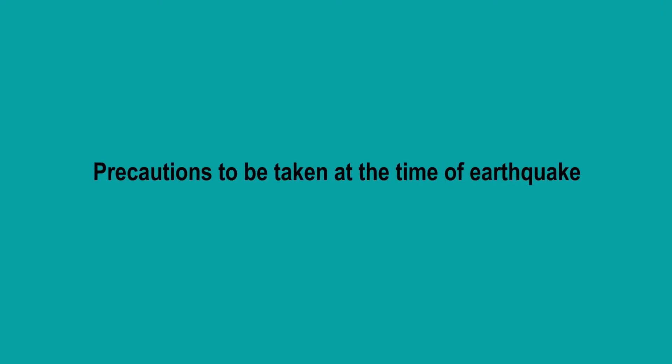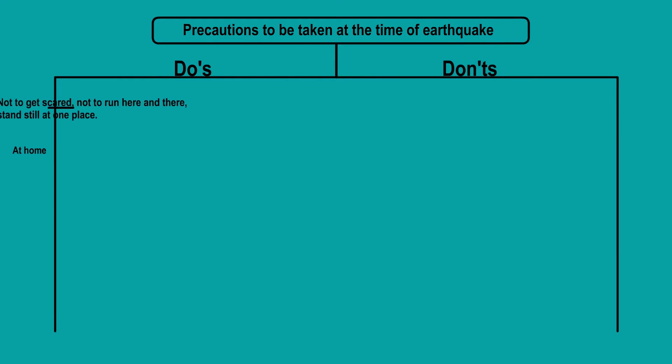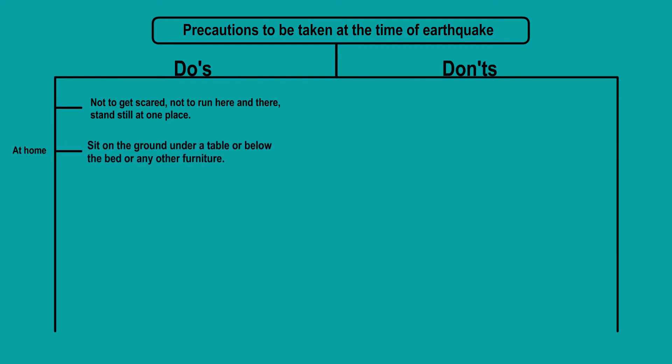Precautions to be taken at the time of earthquake — the do's and don'ts if you are at home. Do not get scared. Do not run here and there. Stand still at one place. Either sit on the ground, under a table, or below the bed or any other furniture. Wait there until the movement of the earth stops. Protect your head and face by covering it with folded hands.